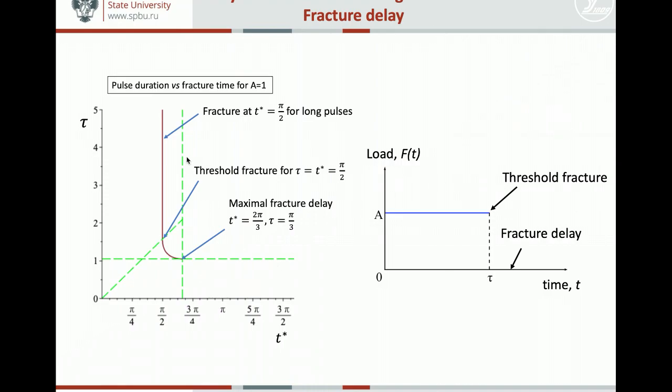So here it's the fracture delay, and here when the fracture occurs just at the time when the load becomes zero, we call it threshold fracture. So analyzing our solution, we can build dependence of the duration of the pulse on the fracture time t star. You can see that for pulse durations lower than pi by three, there is no fracture at all.